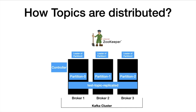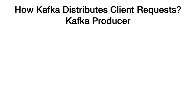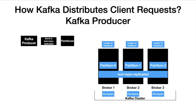Now that the topic is distributed, it's time to learn about how the cluster handles connections from clients. Let's look at the producer end first. The producer has a layer called partitioner, which takes care of determining which partition the message is going to go to. So the producer sends the first message — it goes to the partitioner before being sent to the Kafka topic. The partitioner determines this message should go to partition 0. In this case, the leader of partition 0 is broker 1, so the message will be sent to broker 1.